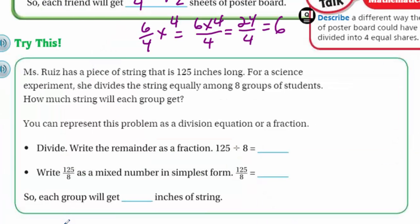Here we have, Miss Ruiz has a piece of string that is 125 inches long. For a science experiment, she divides the string equally among eight groups of students. How much string will each group get? You can represent this problem as a division equation, or a fraction. It says divide. Write the remainder as a fraction. 125 divided by eight. I'm going to go ahead and say, first of all, this could be written as, in this case, 125 over eight. But that's what we need to figure out, what is that amount.